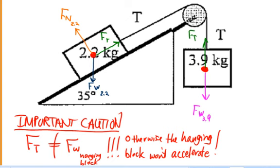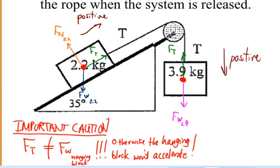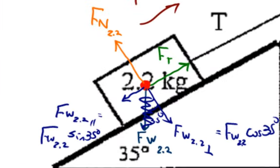Make sure you figure out which way the system is going to accelerate. Now I need to write Newton's second law for each object. The 2.2 kilogram object on the incline has a component of weight acting down the incline, so I need to break that weight into components parallel and perpendicular to the incline. Parallel to the incline, the component of weight is Fw_2.2 times sine of 35 degrees; the perpendicular component is Fw_2.2 times cosine of 35 degrees.